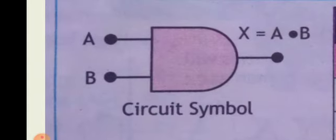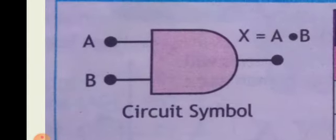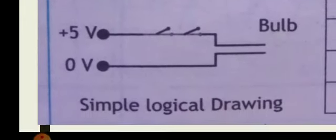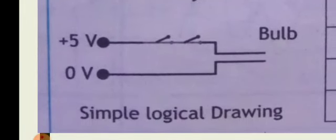The circuit symbol of the AND gate is shown on your screen. Here A and B show the two inputs and x shows the one output. The simple logical drawing shown on your screen represents two switches attached to a bulb, with both ends of the wire connected to a 5-volt battery.